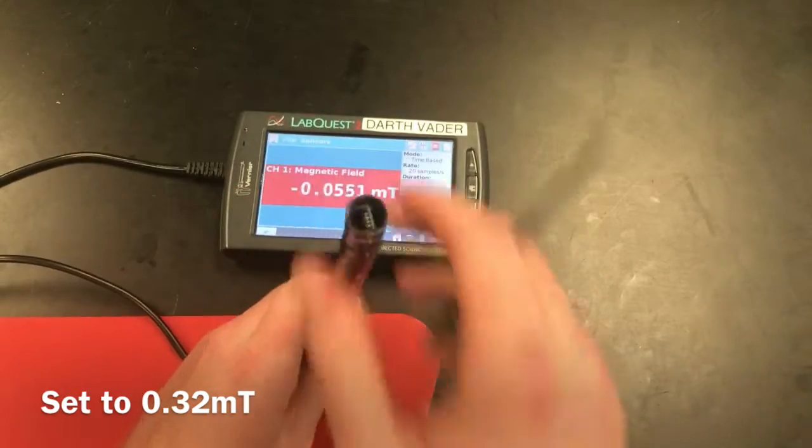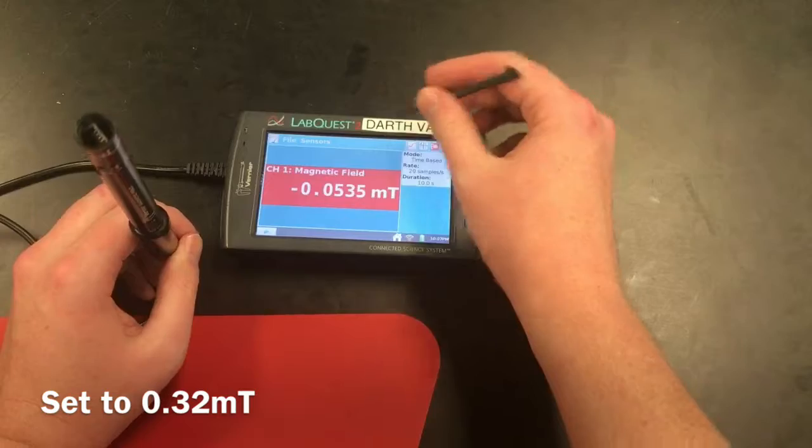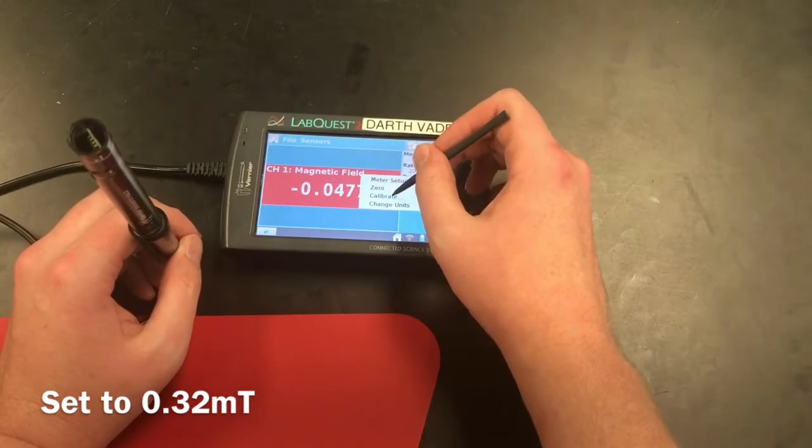Push your probe so that the tip is facing up. And when you do this, zero out your magnetic reading on your LabQuest device.